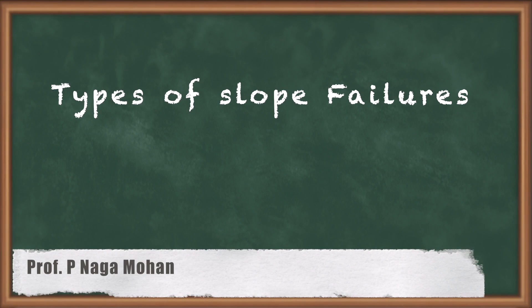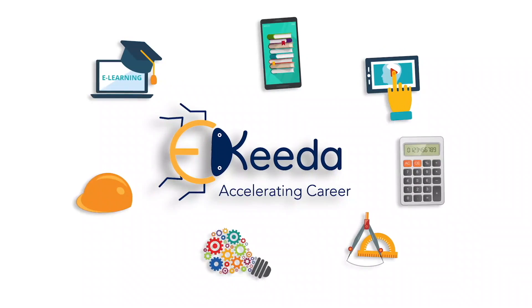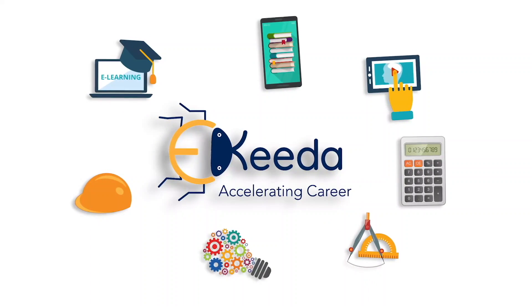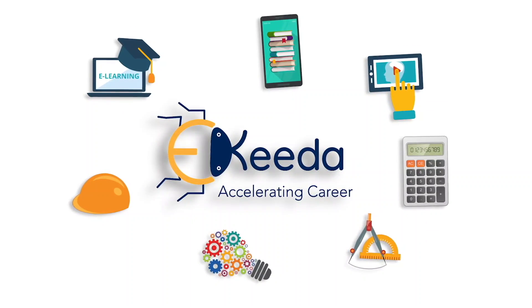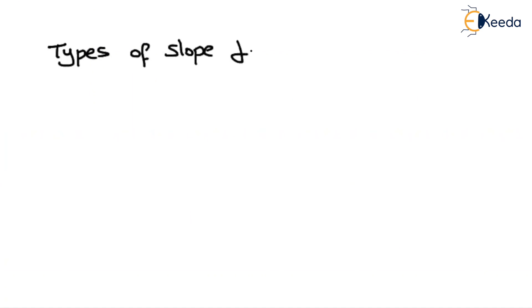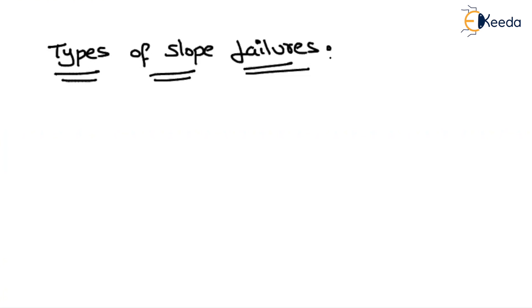Hello friends, in the present video we will discuss about the types of slope failures. Generally, these are classified into two types. One is Translational Failure and the other is Rotational Failure.